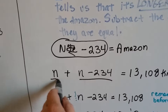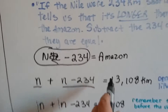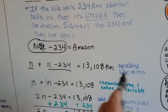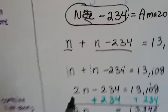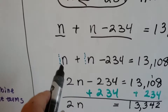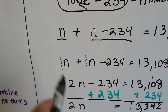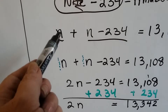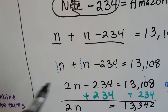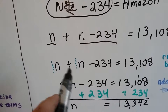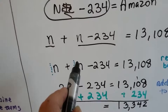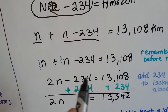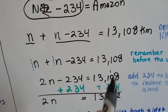So the equation is: N plus (N minus 234) equals 13,108. Now we combine like terms — we have two Ns. Remember, there's an invisible coefficient of 1 in front of each variable, so 1N plus 1N equals 2N. Now we have 2N minus 234 equals 13,108.